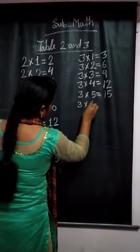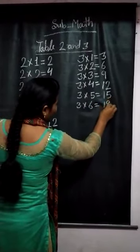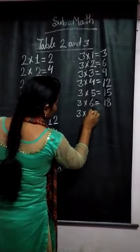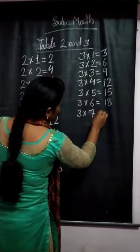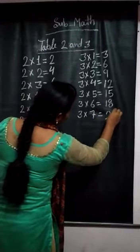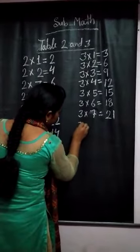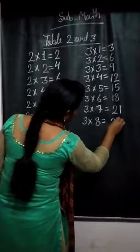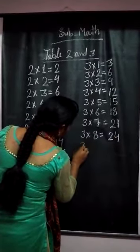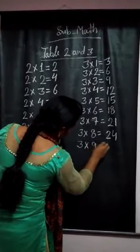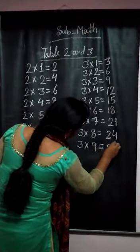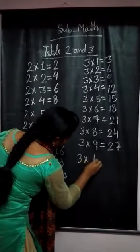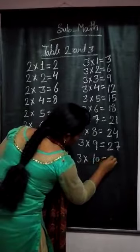3 times 6 is 18. 3 times 7 is 21. 3 times 8 is 24. 3 times 9 is 27. 3 times 10 is 30.